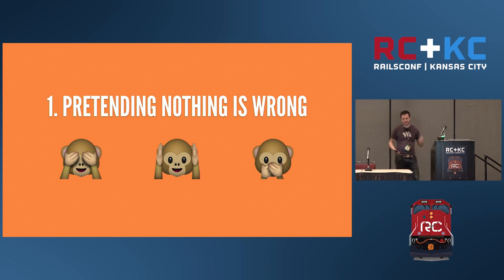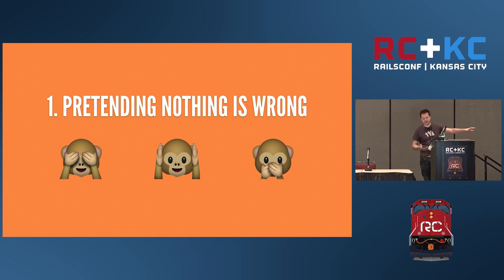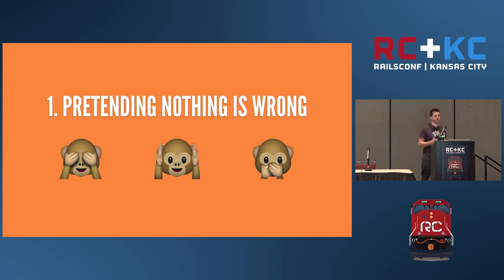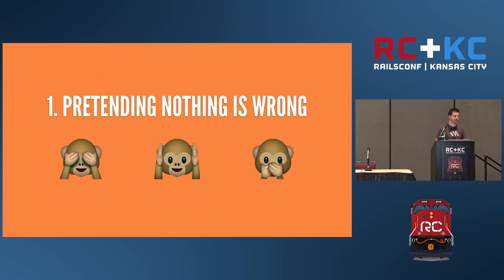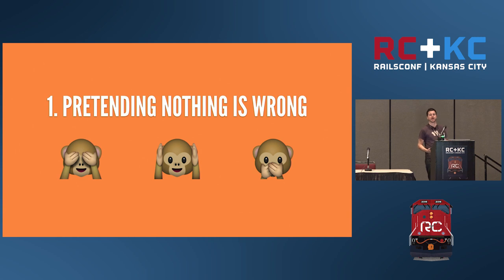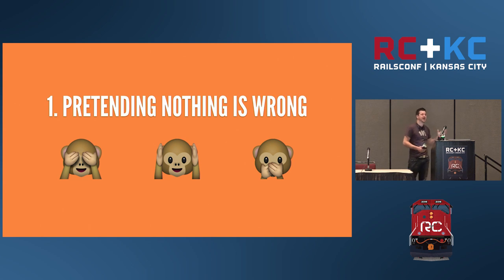Sin number one: pretending nothing is wrong. This comes from an old-school mentality of different release cycles — you build it, you ship it, and you're done. Software is changing, and that's not how it's built anymore. You build it, you send it to customers as soon as you can, you see if it works and if they like it. If you believe nothing's wrong, none of this matters.